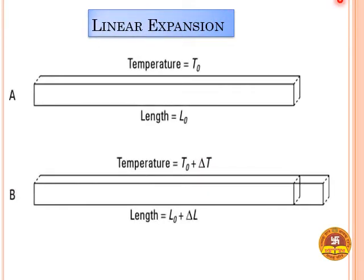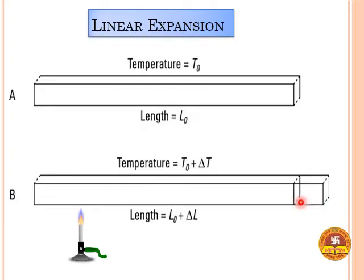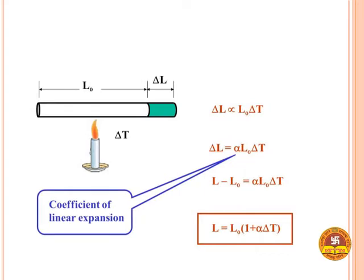First we will discuss linear expansion. We have taken a rod whose initial length is L₀ and initial temperature is T₀. On heating this rod, the length increases — let that increase in length be ΔL. So the total length is L₀ plus ΔL. Also the temperature rises due to heating — let that rise in temperature be ΔT. So the final temperature is T₀ plus ΔT.